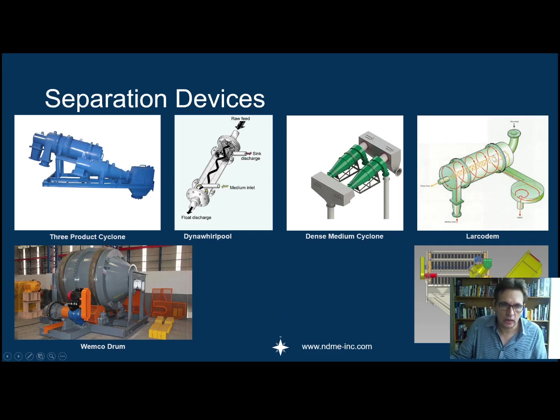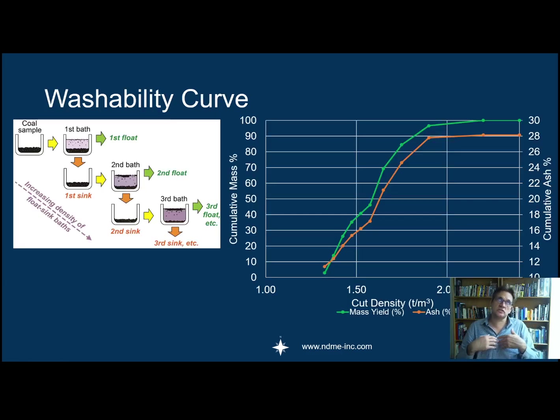When you design and try to infer the performance that you could get from your material from a dense medium separation, you typically do what they call a washability curve. What I'm doing here is I'm showing you for coal what it looks like. What you typically would do is you would have a liquid of a higher density, like 1.5, and you put your coal in there and you take your sinks off.